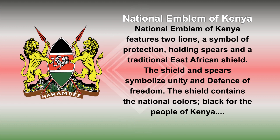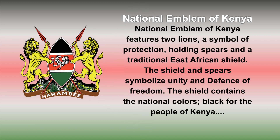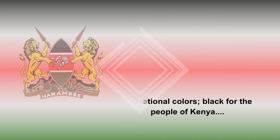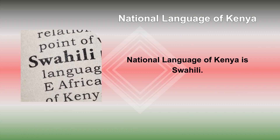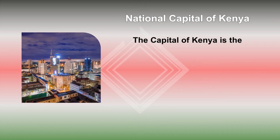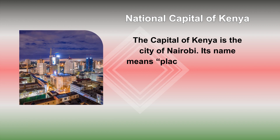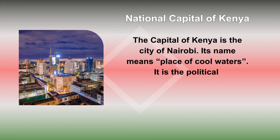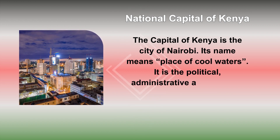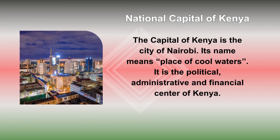The shield and lions stand on a silhouette of Mount Kenya, containing in the foreground examples of Kenya's agricultural produce. The coat of arms is supported by a scroll upon which is written the word 'Harambee,' which is Swahili for 'all for one.' The national language of Kenya is Swahili. The capital of Kenya is the city of Nairobi, whose name means 'place of cool waters.' It is the political, administrative, and financial center of Kenya.